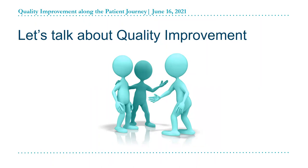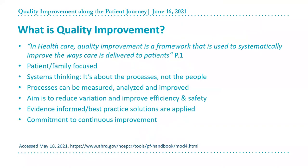Now let's talk about quality improvement. My name is Shauna Langenberger. Quality improvement is a framework used to systematically improve the way that care is delivered to patients. Paramount is a focus on patient, family, and customer. It's systems thinking — it's about the processes, not the people. It's recognition that processes can be measured and evaluated. One key aim is to standardize, reduce variation, and improve efficiency and safety, including evidence-informed best practices. Quality is not a start-and-stop project — it's about continuous improvement.